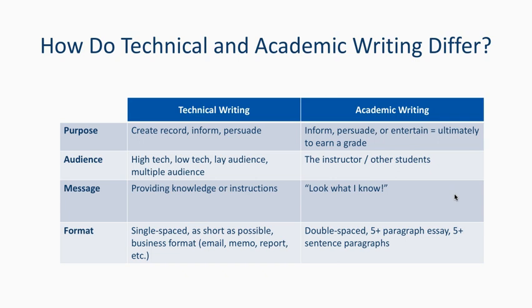The audience for technical writing is typically high-tech, low-tech, lay, or multiple. High-tech means peers within the field who understand your terminology and context. Low-tech means some familiarity but needing occasional explanation and definitions. A lay audience is a general audience — anyone walking up — who would definitely need more context and definitions.